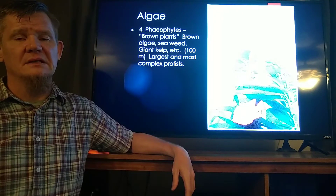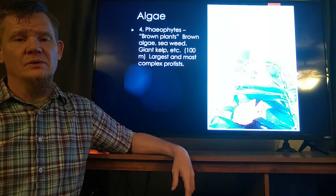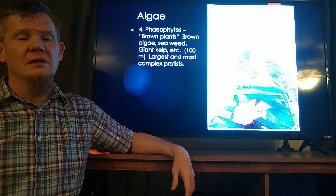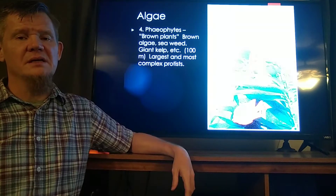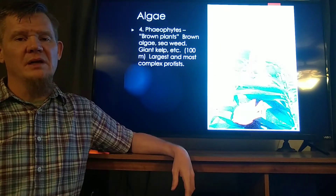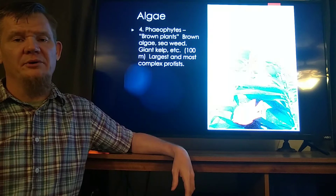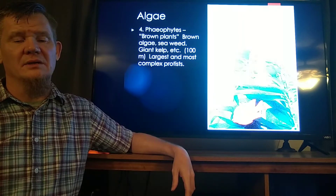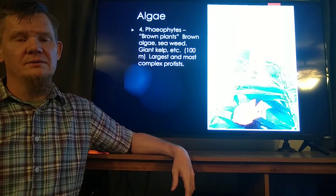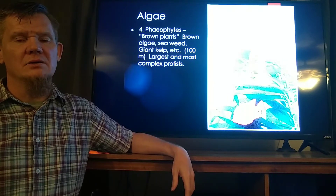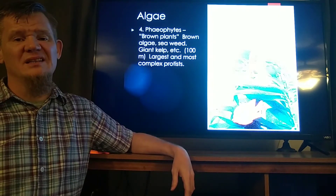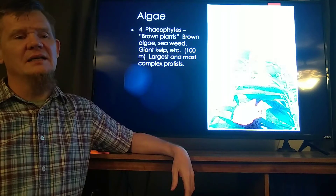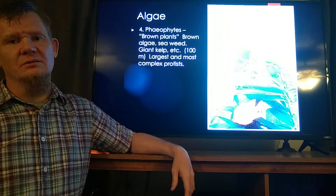Remember we're doing the survey of life. Our strategy, our scheme is least complex to most complex. We've talked about the prokaryotes — bacteria and archaea — and now we're talking about the eukaryotes. Within domain Eukarya there are plants, animals, fungi, and these things called protists.